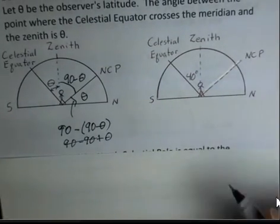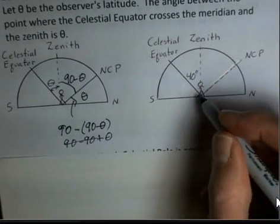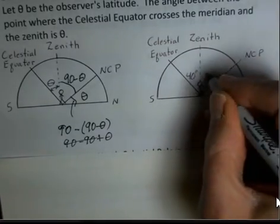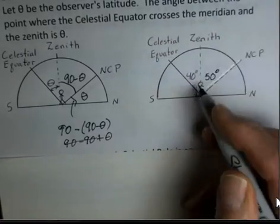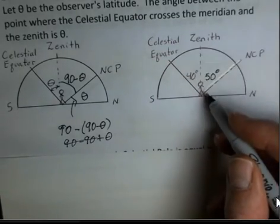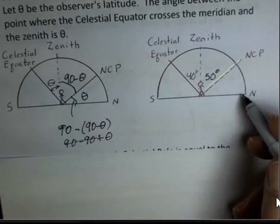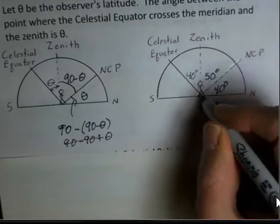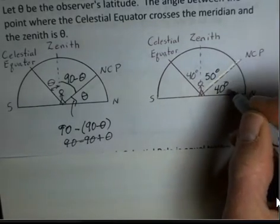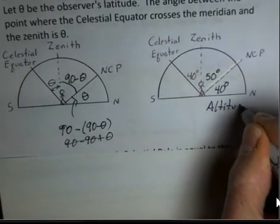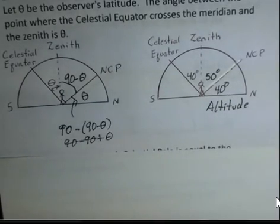Let's put in numbers here. With 40 degrees latitude, we have a right angle from the celestial equator to the North Celestial Pole, so I've got 50 degrees there — these two add up to 90. And then we have a right angle between the zenith and our horizon going towards the north point, so I need 40 degrees so that 40 and 50 add up to 90. Therefore, 40 degrees is the altitude of the North Celestial Pole for an observer at 40 degrees latitude.